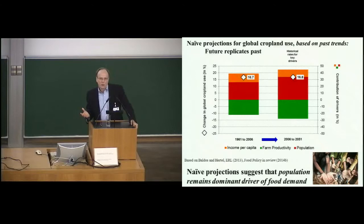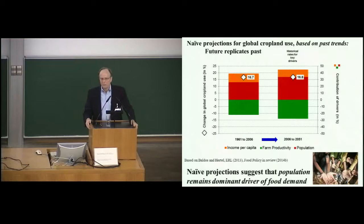Income and population are pushing land use change up, while technology is diminishing that. On net over this period, despite the fact that crop production went up by 200 percent, there was less than a 20 percent increase in crop area. That's an amazing accomplishment in terms of technology and intensification — not just yields but irrigation, multiple cropping, and so on. It's really remarkable, and one can gain some hope from that looking forward, if we can replicate it in the future.